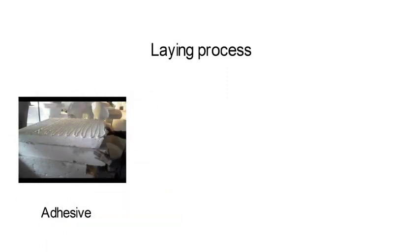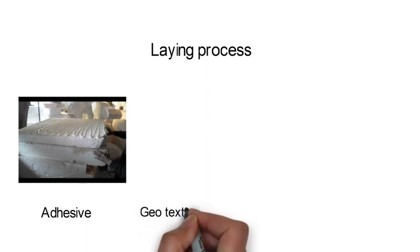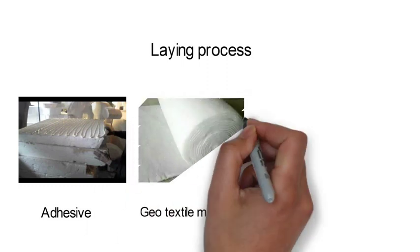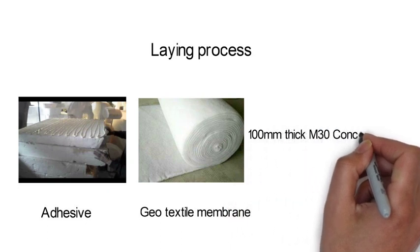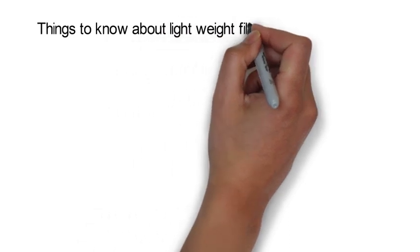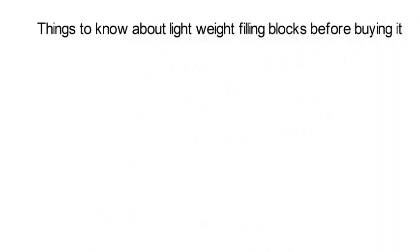Laying process: An adhesive compatible to EPS is used for bonding with bottom surface and interlocking between the blocks. Geo-textile membrane of 150 GSM on blocks shall be placed with minimum overlap of 50mm. In my building project, I have used 100mm concrete screed of M30 grade as a protective cap on top. Things to know about lightweight filling blocks before buying it: